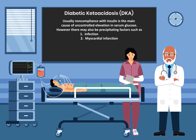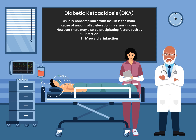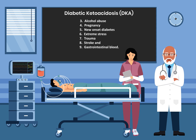Usually, non-compliance with insulin is the main cause of uncontrolled elevation in serum glucose. However, there may also be precipitating factors such as infection, myocardial infarction, alcohol abuse, pregnancy, new onset diabetes, extreme stress, trauma, stroke, and gastrointestinal bleed.